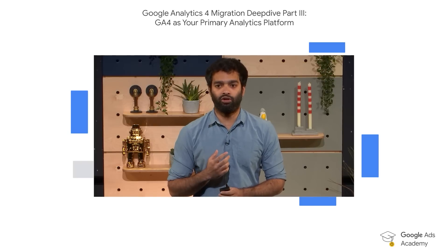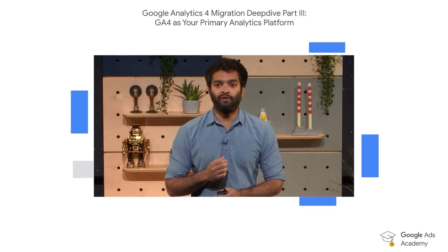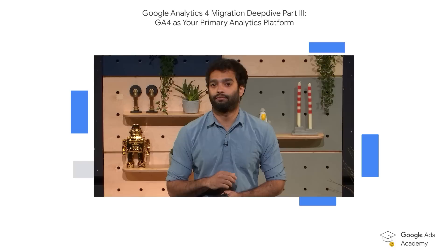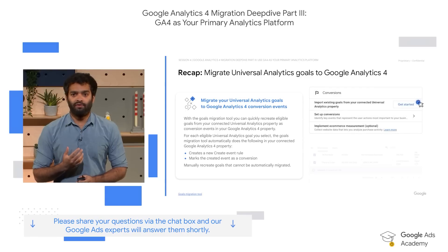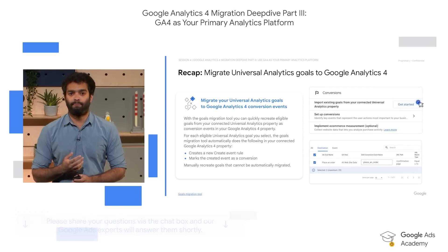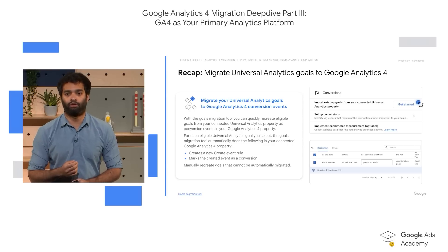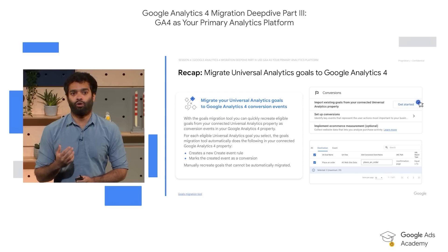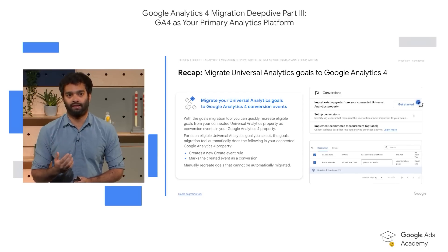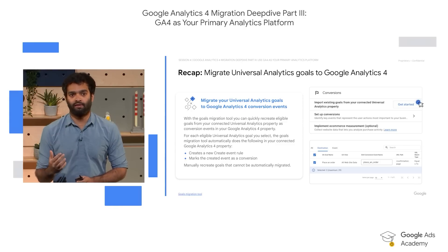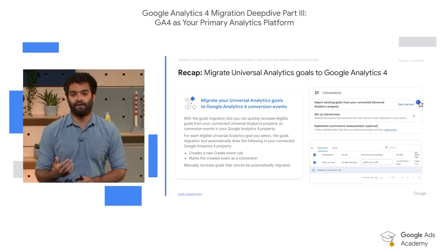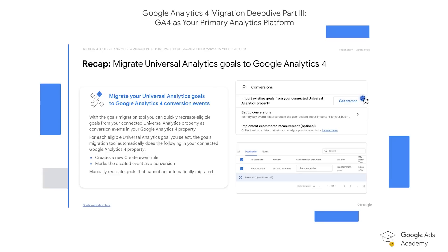A quick heads up: this session will cover quite a lot of detailed information, but you can go back and rewatch on demand. As mentioned in previous sections, all Universal Analytics properties will stop processing new hits on July 1, 2023 for standard properties, and October 1, 2023 for 360 properties. This means not only will we stop processing reporting data in UA properties after these deadlines, but conversions and audiences set up in Universal Analytics will also stop populating — which has consequences from a smart bidding optimization and campaign targeting perspective. Therefore, it becomes imperative to migrate Universal Analytics goals to Google Analytics 4 as quickly as possible.